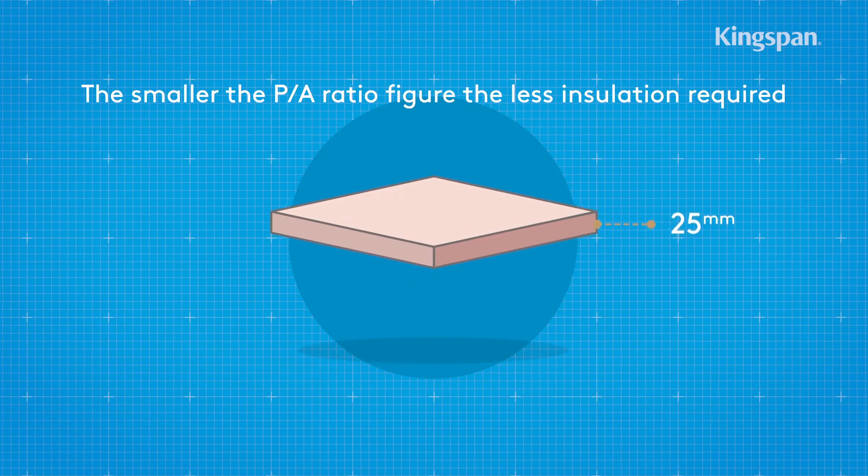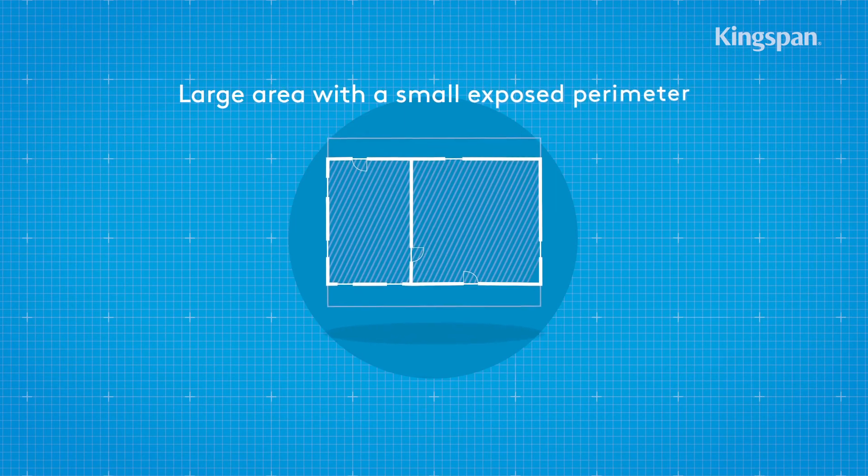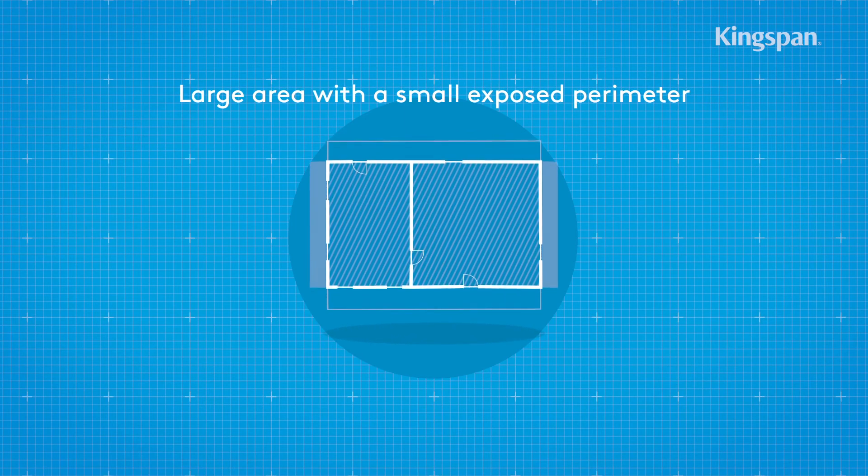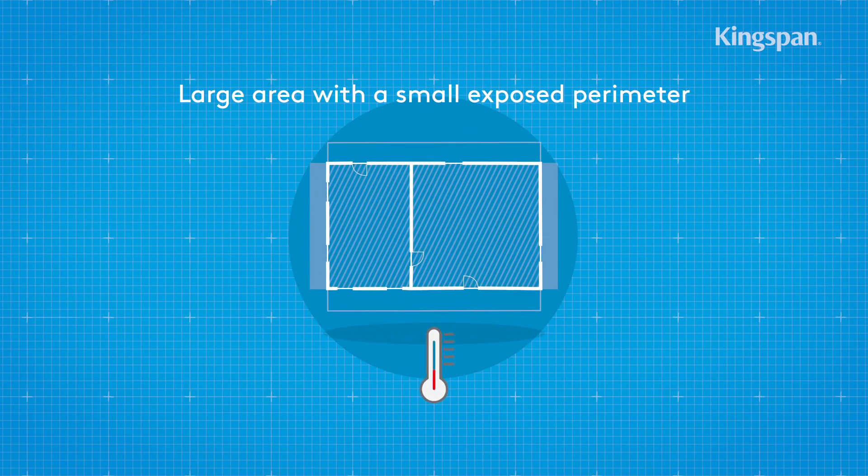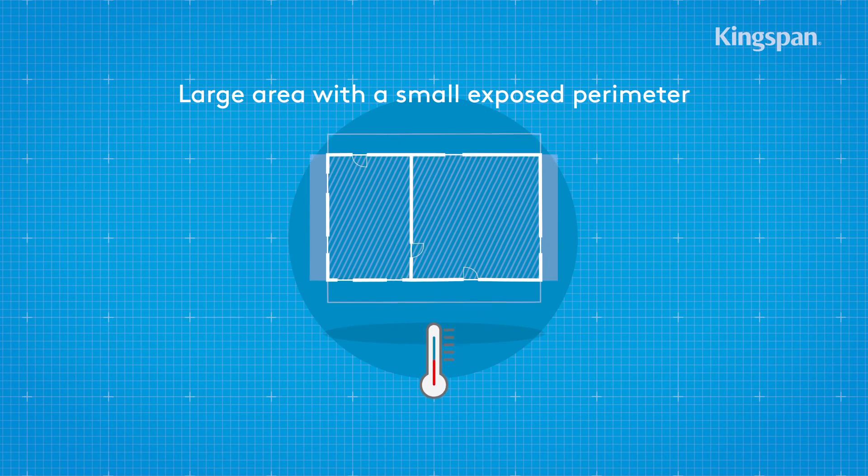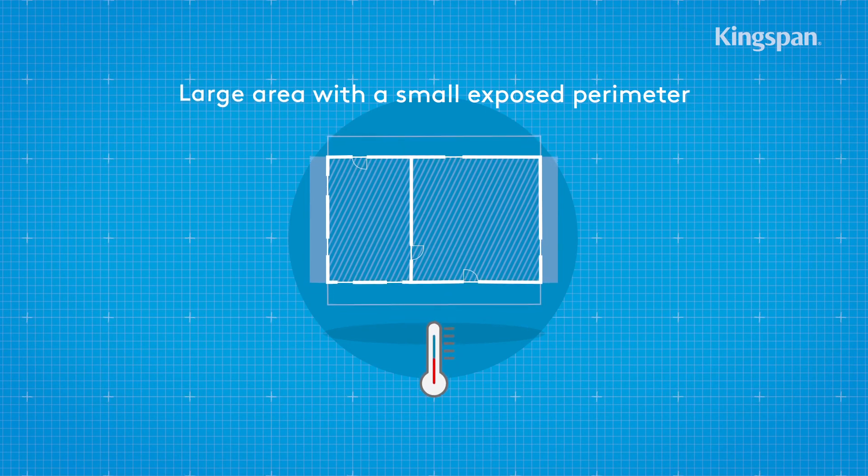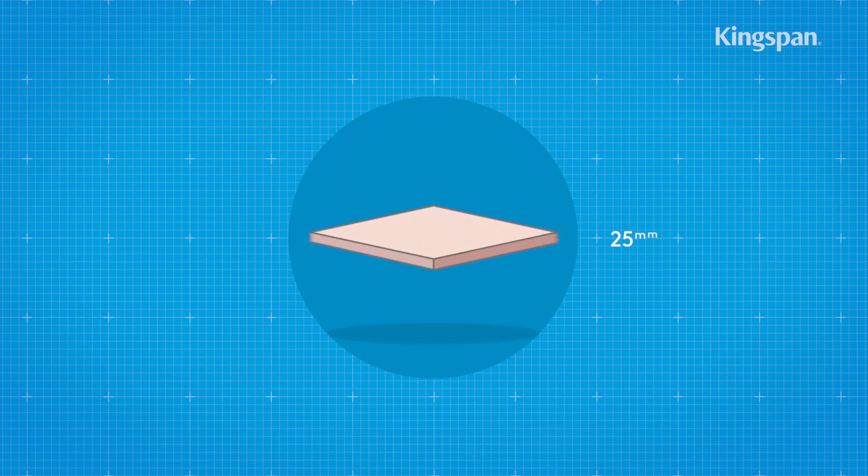The smaller the perimeter area ratio figure, the less insulation required. A large area with a small exposed perimeter will have less heat losses and therefore will require less insulation. Once you have your perimeter area ratio, you can work out how much insulation you need.